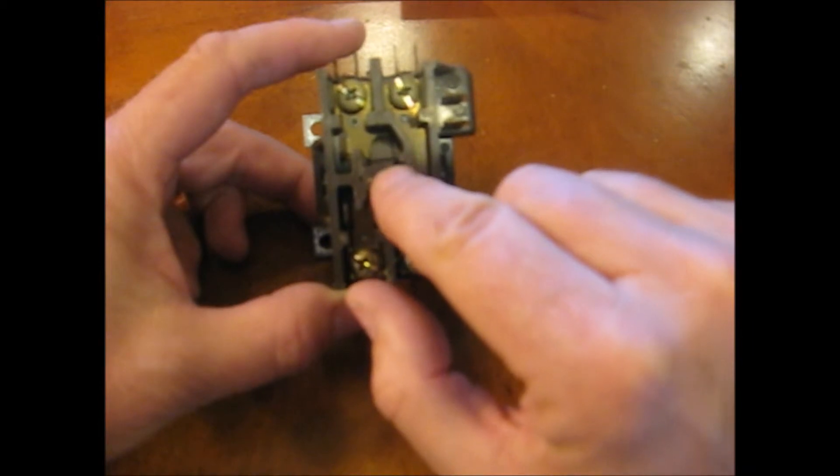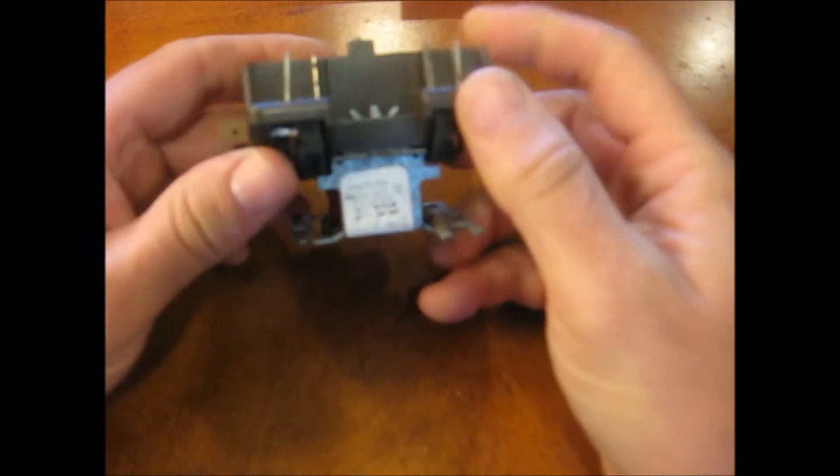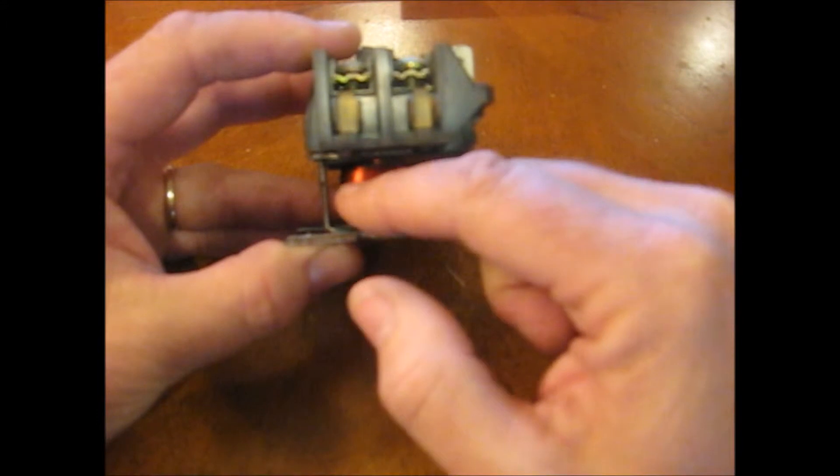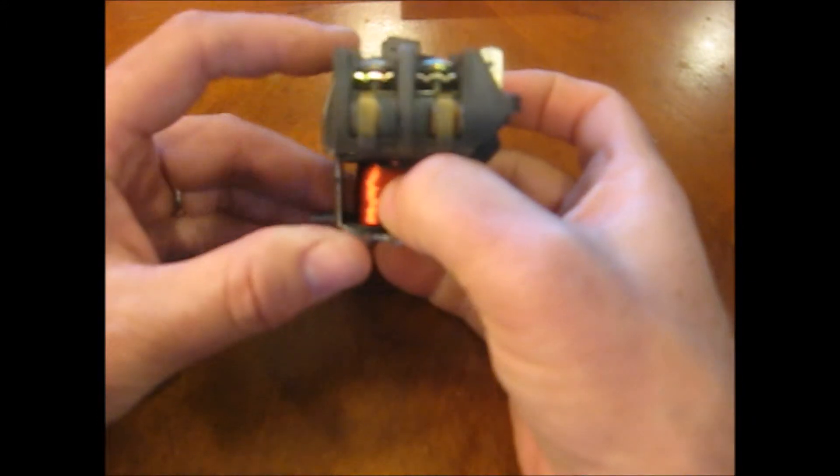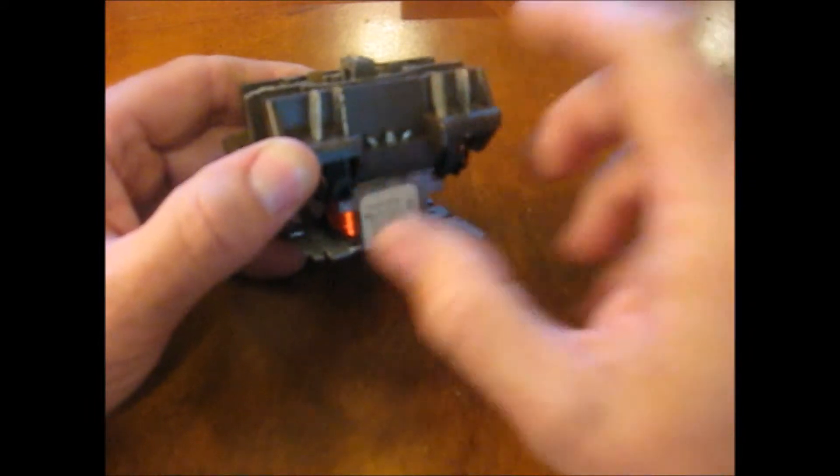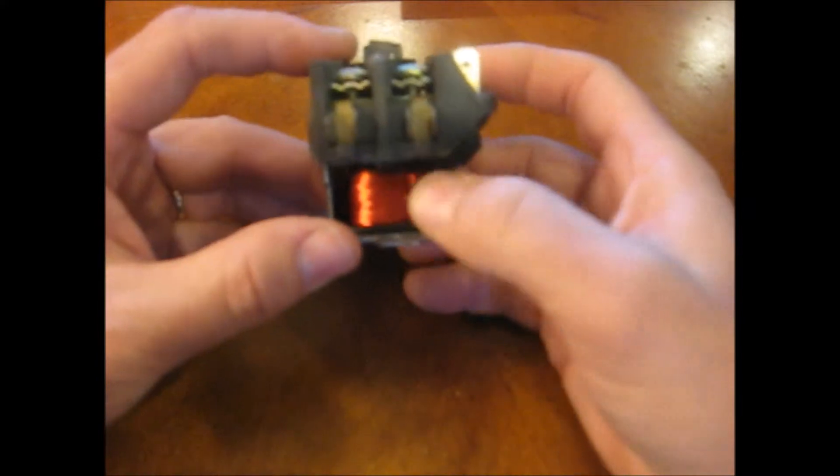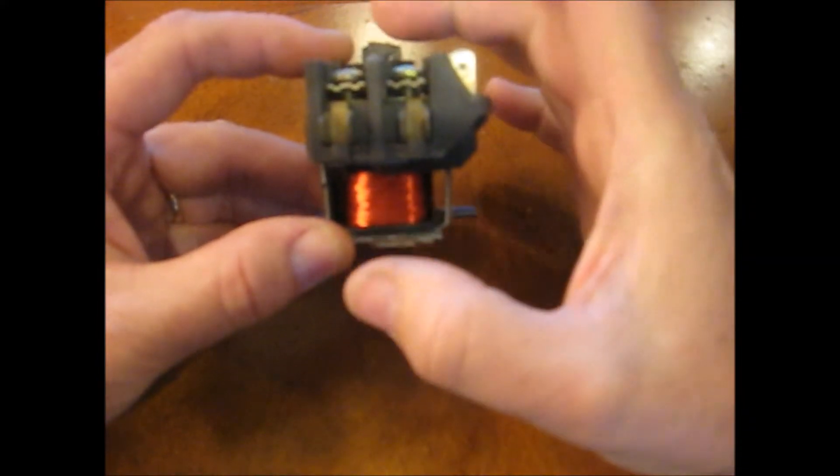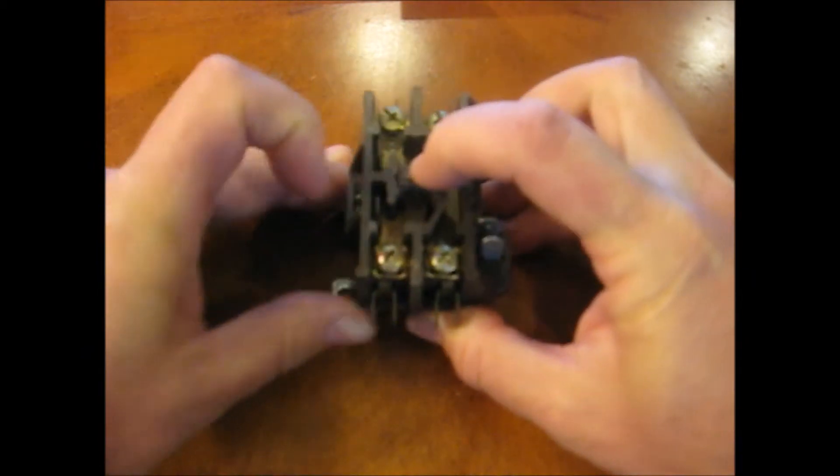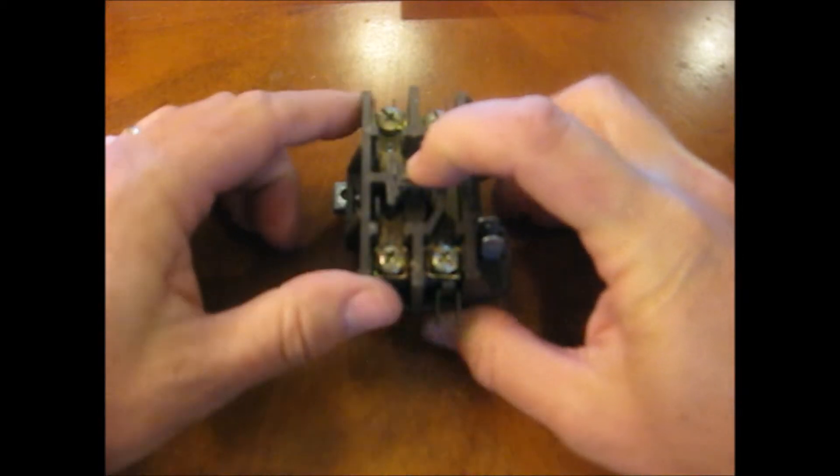The switch which is on a spring is controlled by a magnet. The magnet is an electromagnet and it is energized by this coil down here which runs on low voltage. The low voltage connections are here. So when this is energized it creates a magnetic field and pulls the switch down, connecting the line side to the load side of the contactor.